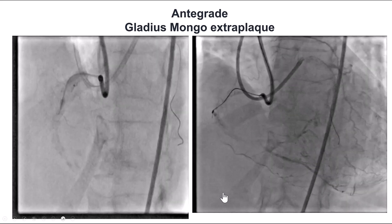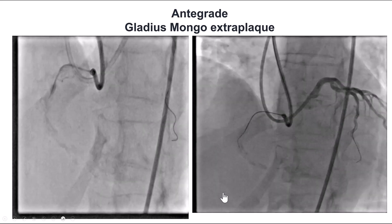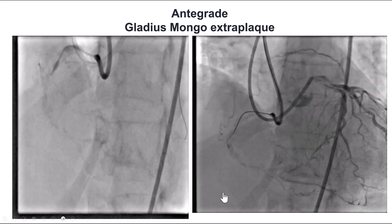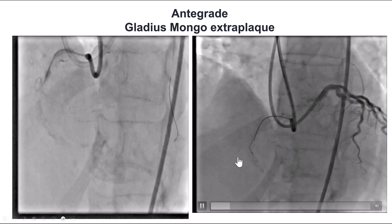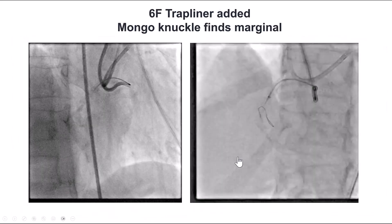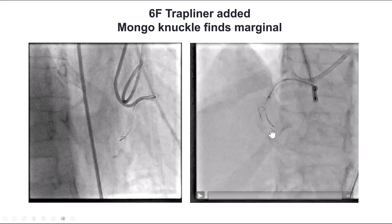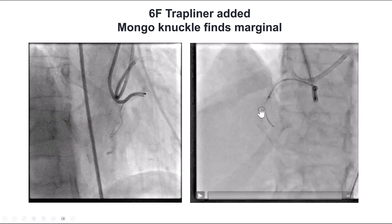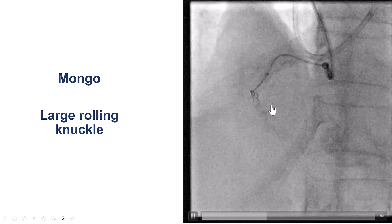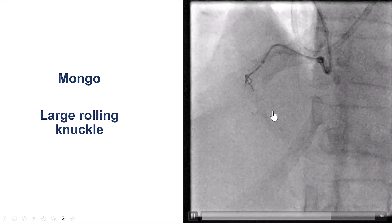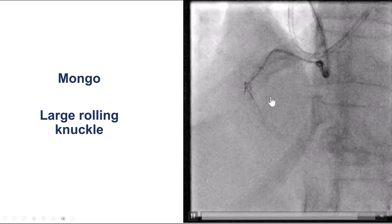After multiple attempts, we decided to go back to the antegrade approach and this time tried to do antegrade dissection reentry. We advanced the Gladius-Mongo guide wire, which seemed to go into the extraplaque space. The Mongo deviated a little bit into an acute marginal — it is very important to do orthogonal projections to confirm that the wire is not going across the course of the vessel. With repeated attempts, we were able to create a very large rolling knuckle with the Mongo that helped us bypass the acute marginal branch.